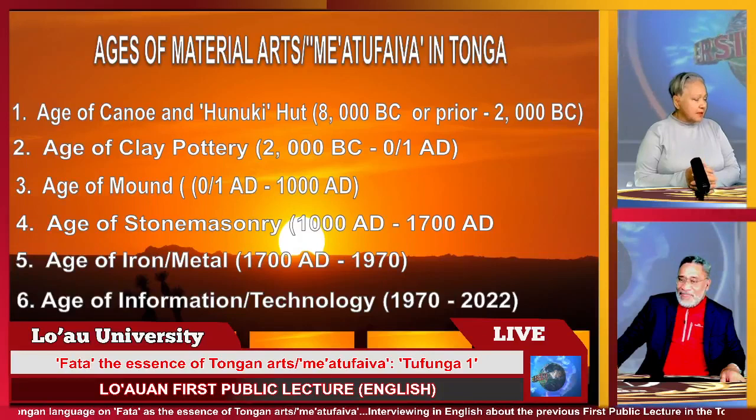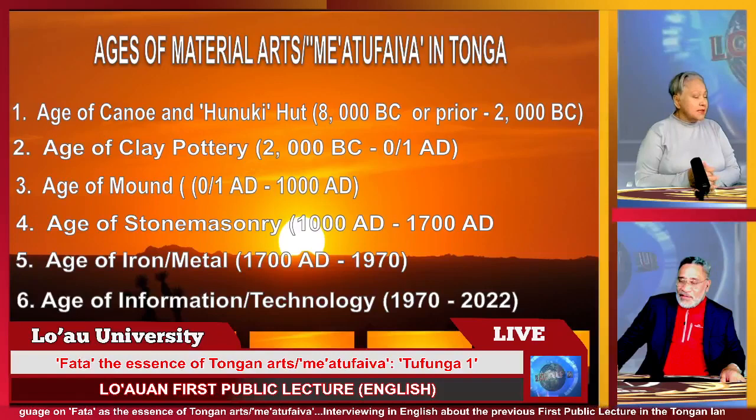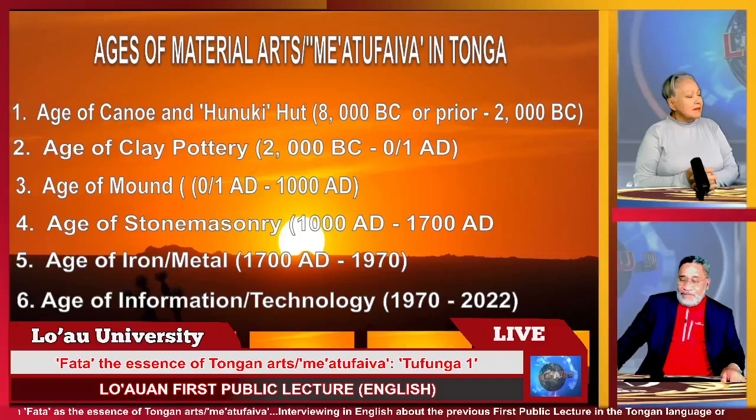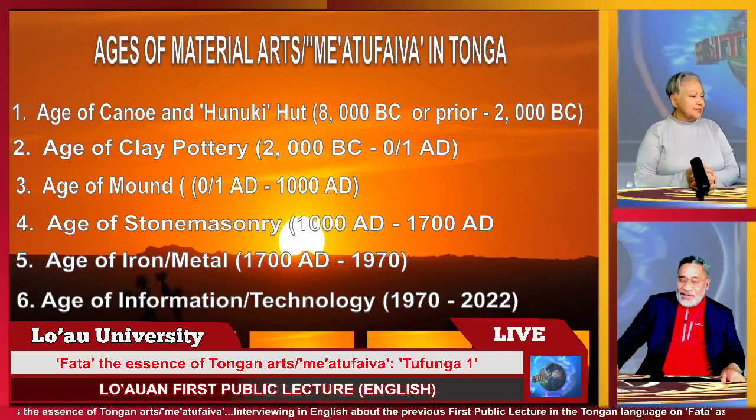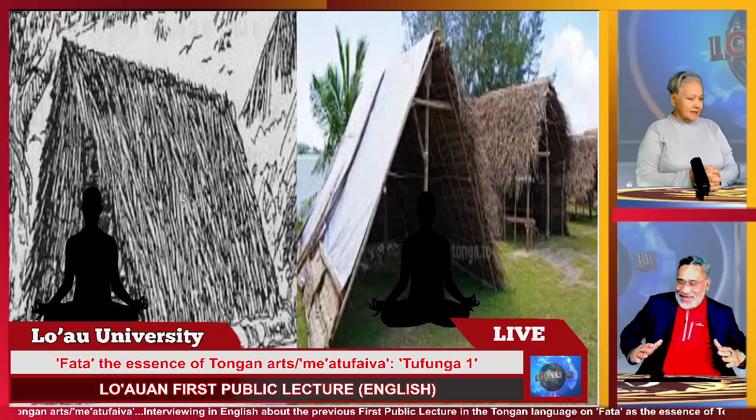The Hunuki Hut: Hunuki is a Tongan word for when you just poke something into the ground. People arrive and quickly put up a hut. It looks like a triangle being pierced into the ground — quick, portable. You put one coconut leaves from this side, one coconut leaves from the other, and a few sticks. A very small, very portable hut.